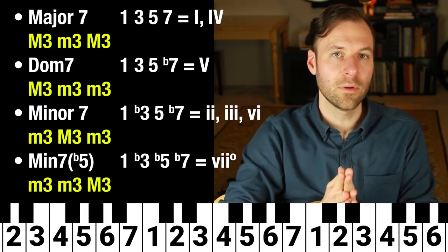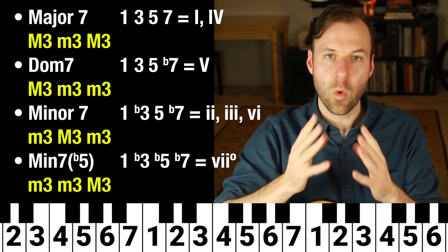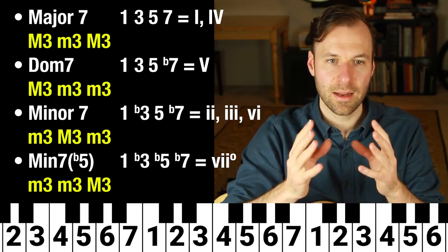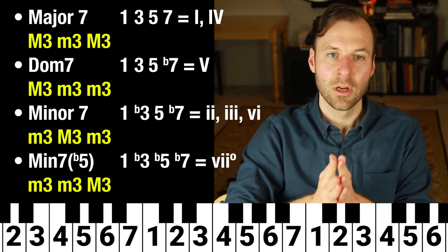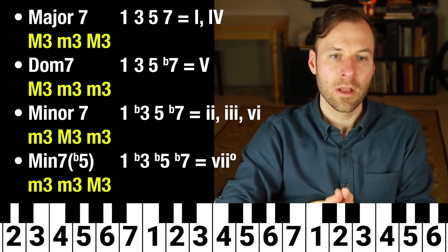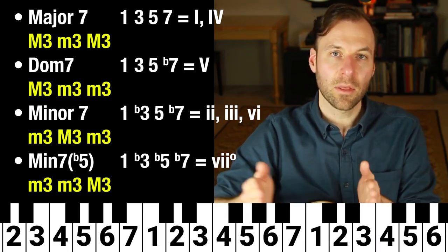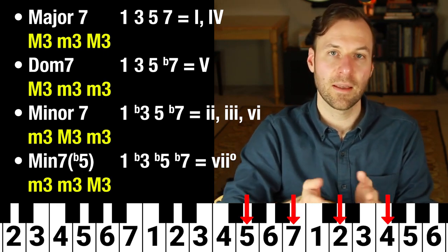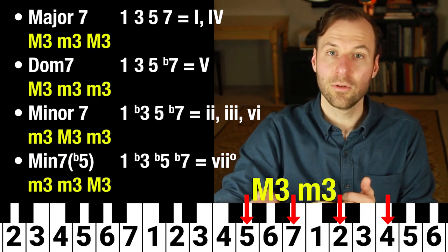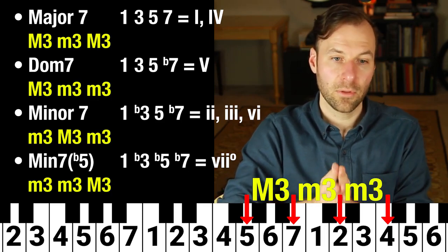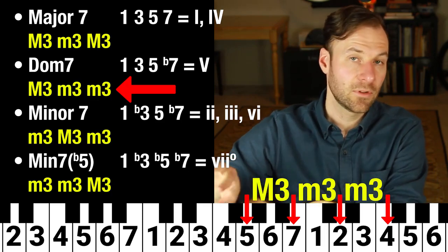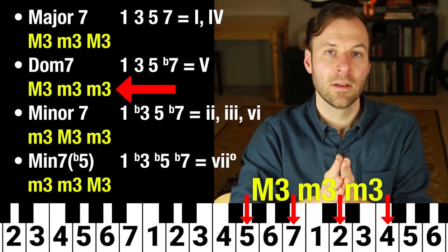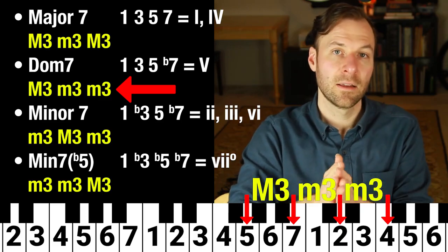The five chord is worth the whole explanation, because it shows why the five chord is the only dominant seven chord in the key. When we build it out: five to seven is a major third, seven to two is a minor third, and two to four is another minor third. So it's the only place where you have two minor thirds stacked on top of a major third, and that's why the dominant seventh chord only exists as the five chord of the key.